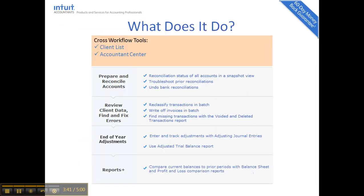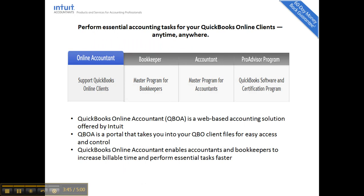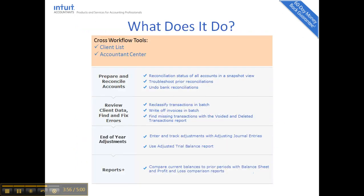QuickBooks Online Accountant is a web-based application — a portal into your client QBO files. It gives you many of the accounting tools you know from the desktop edition that aren't standard to QuickBooks Online, saving steps and time. It has a client list and accountant center. You can undo a bank rec with a click of a tab. It has a couple of client data review tools, batch classifying, write-off invoices, comparison reports, and you can make adjusting journal entries. In QuickBooks Online, it supports more than one AR/AP per journal entry.